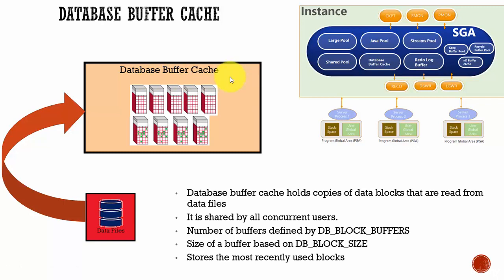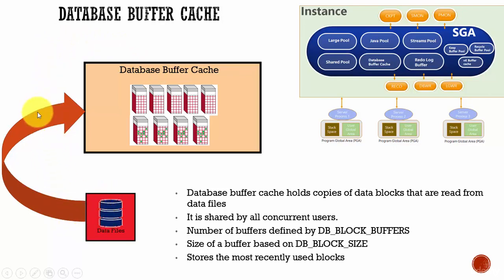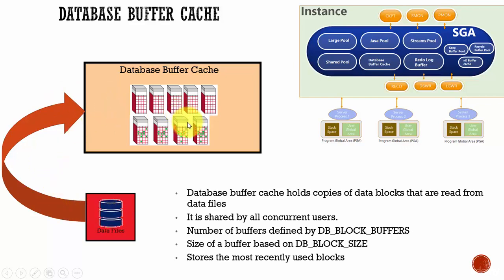One point to remember: if the user requests for data, the data has to be read from the data files into the database buffer cache before sending to the user. It cannot directly read from the data files and send it to the user. If the data is present in the database buffer cache, Oracle will immediately return the data. If it is not found, it will read from the data files, store it in the database buffer cache, and then return the data to the user.